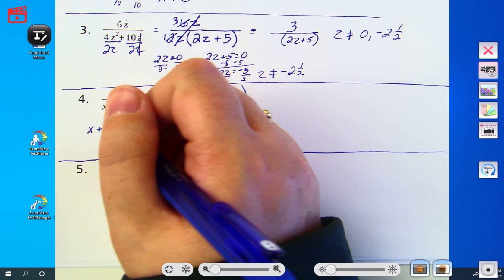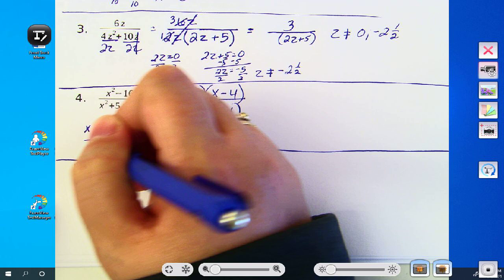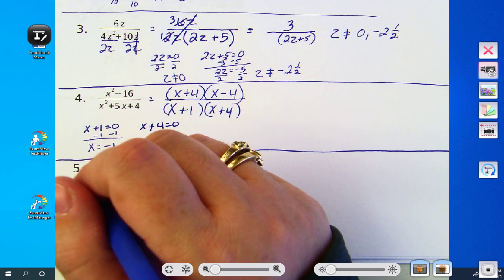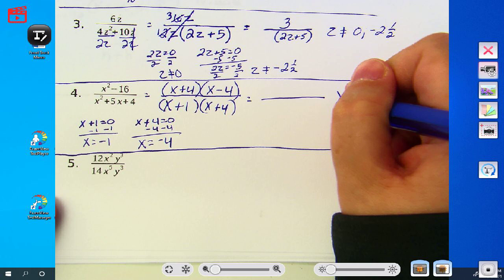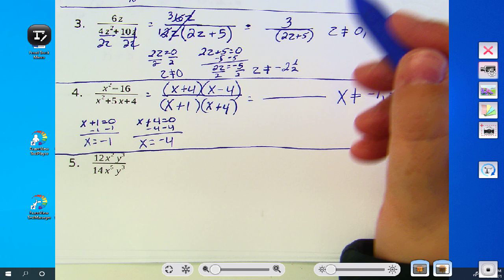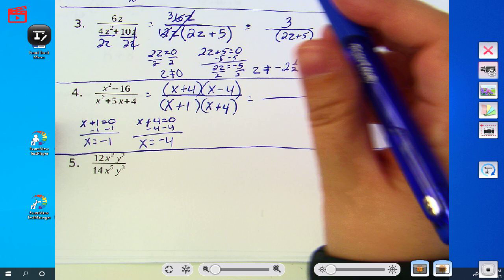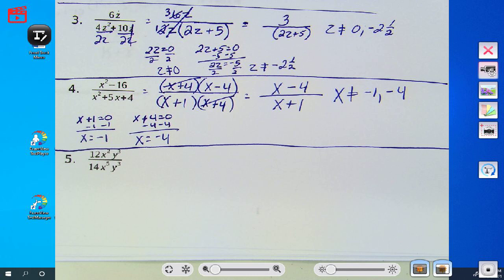Okay, so what did you do to solve the first one? They added one. What are you going to do? Everyone should know this. Subtract one. They added four. What are you going to do? Huh? Subtract four. So we know x cannot equal negative one and negative four. Ethan, I need your head up. What do you see you can cancel? The x plus fours. So you have x minus four over x plus one. Okay. Questions?